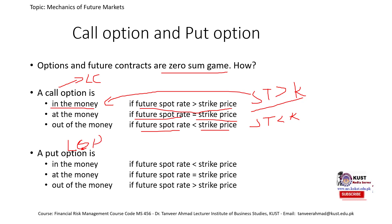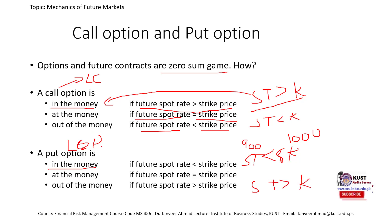When ST is less than K, the long call option is out of the money. When ST equals K, it is at the money — a no profit, no loss situation. For the long put, it is in the money when ST is less than K. We saw this in the previous example: when the future spot price was 900 and the strike price was 1000, the put option holder had a profit. When ST is greater than K, the long put is out of the money — exactly opposite to the long call.